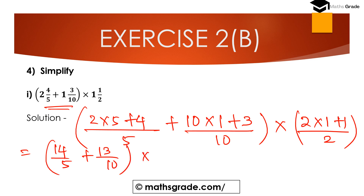Then multiply: 2 multiplied with 1 is 2, 2 plus 1 is 3, giving 3/2. Now find out the LCM of denominators 5 and 10. The LCM of 5 and 10 is 10.